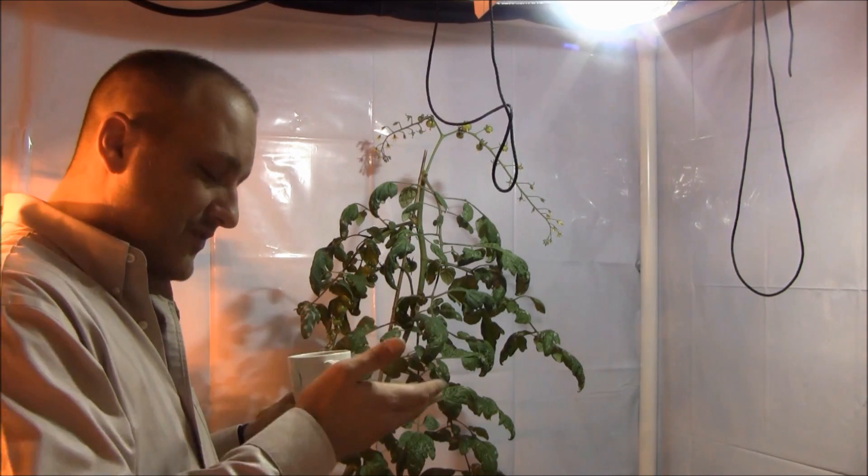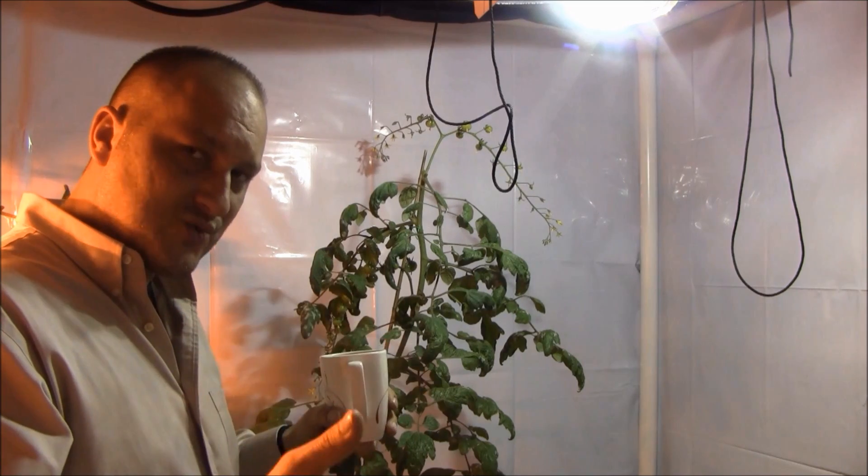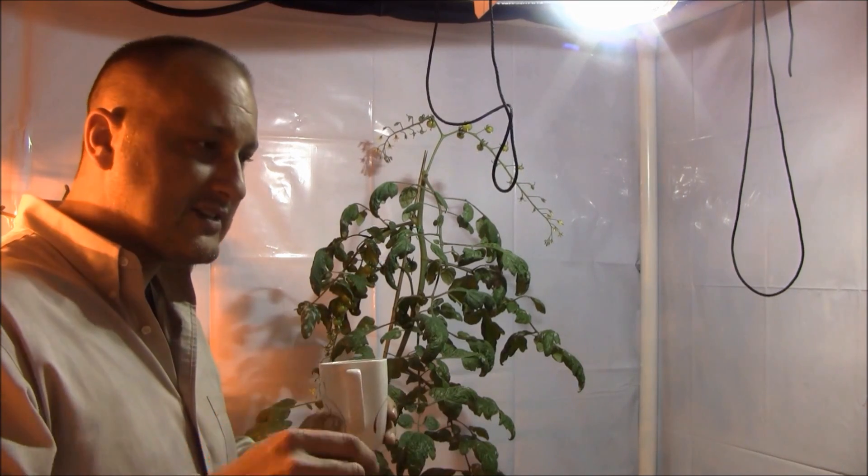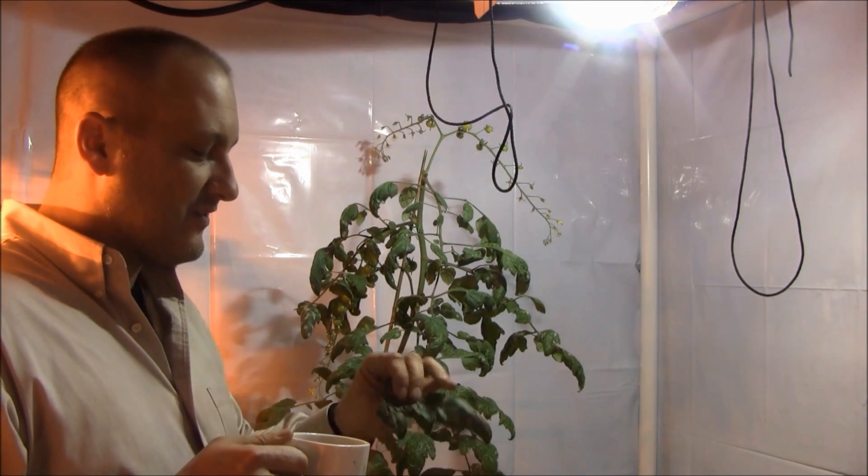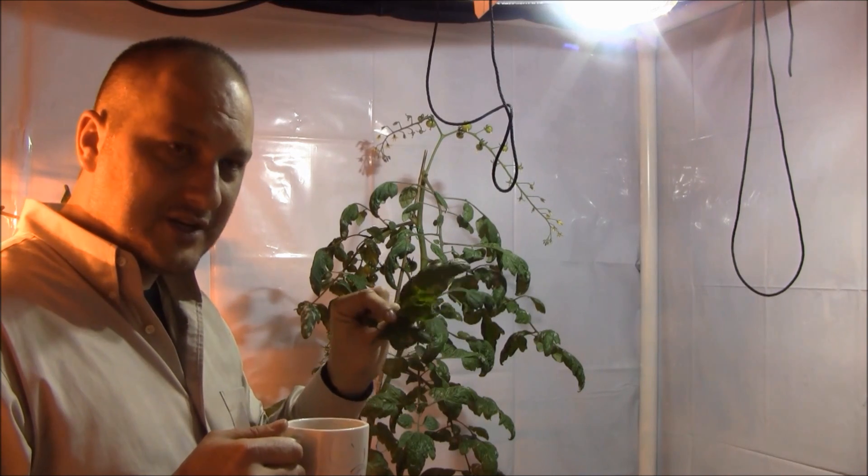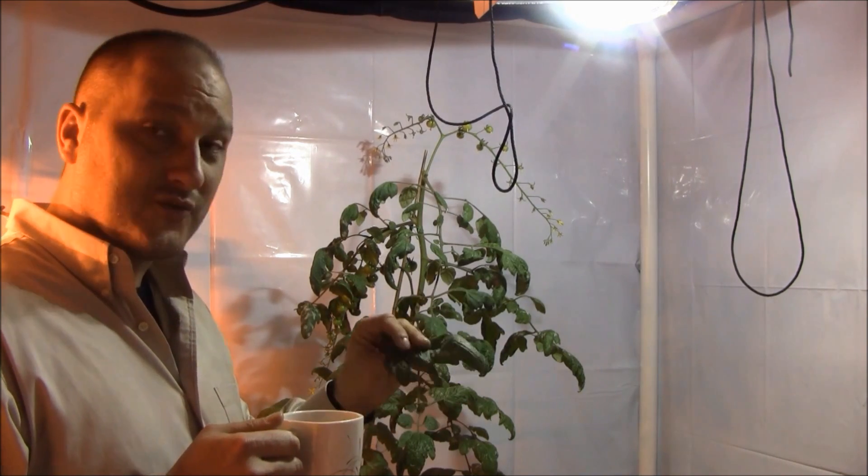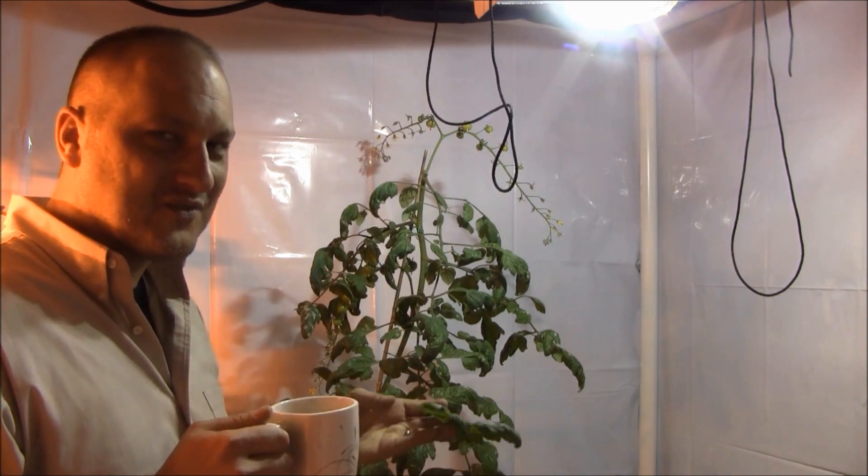And then there's another way which I'm going to use today, which is nine parts water to one part hydrogen peroxide. That also makes spore production not so friendly on these types of plants, for lack of a better word.